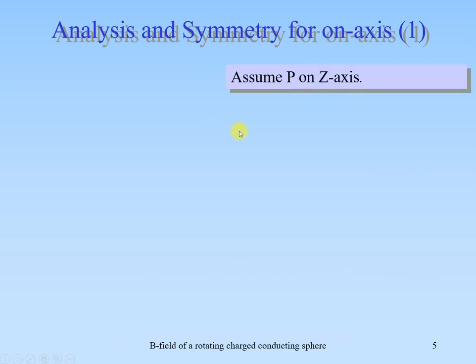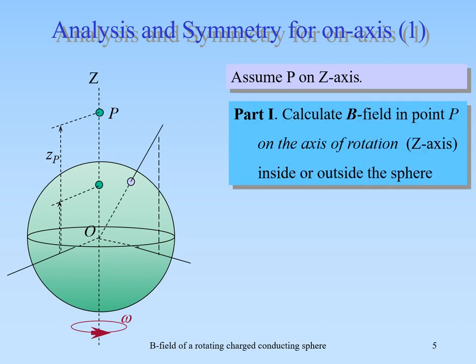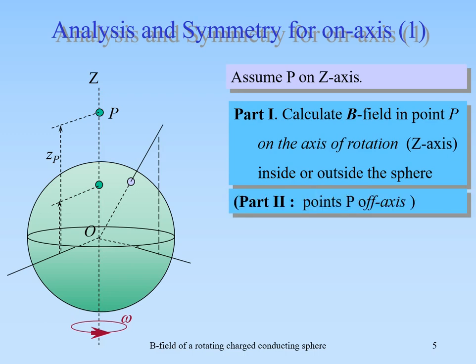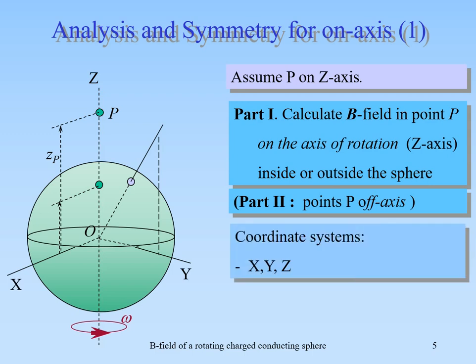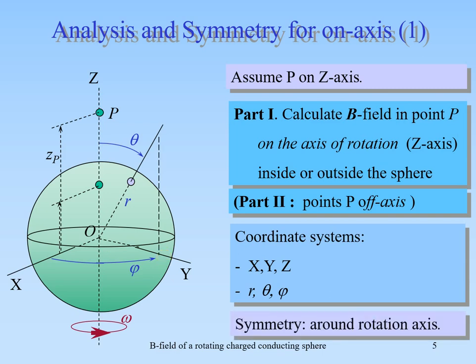Analysis and symmetry for on-axis: assume P is on the z-axis, which we use as the rotation axis. Point P can be inside or outside the sphere. We calculate the B field at point P on the axis of rotation. We have two coordinate systems: Cartesian x, y, z and spherical r, theta, phi. Here r is the radius, theta is the polar angle, and phi is the azimuthal angle. We have symmetry around the rotation axis.